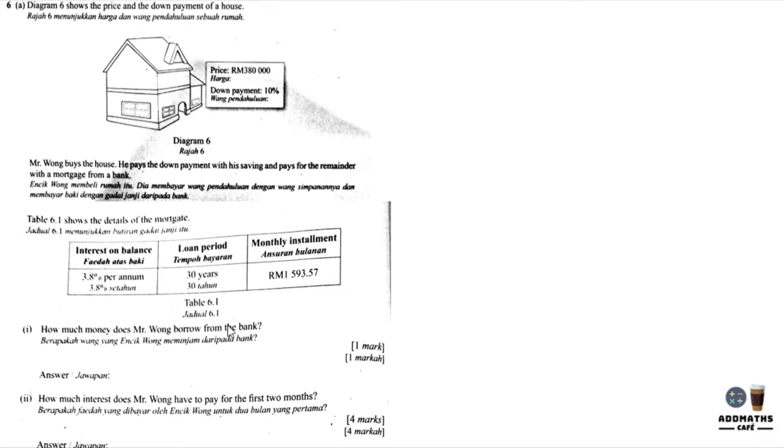How much money does Mr. Wong need to borrow? $380,000, down payment is 10%. So the down payment will be $38,000 by using calculator. So the money that you need to borrow is $380,000 minus $38,000, you will get RM342,000. So RM342,000 is the money that you need to borrow.